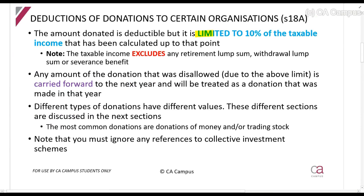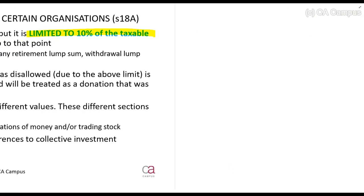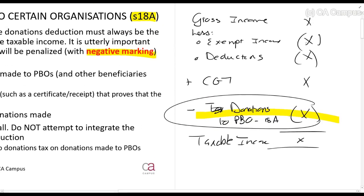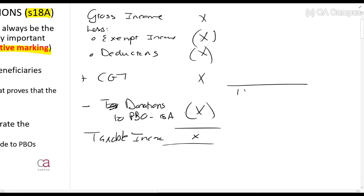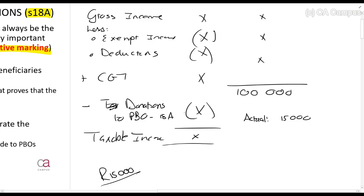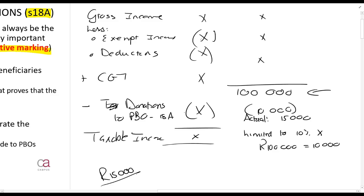What is a public benefit organization? Things like a school, university, hospice, charities — those types of things. Now, how does this deduction work? It is limited to 10% of taxable income. Before you do your donations deduction, you calculate what your taxable income is. So: gross income less exempt income less all deductions gives you, say, R100,000. If my donation is R15,000, it is limited to 10% times R100,000, which is R10,000. The excess of R5,000 is carried forward to next year.